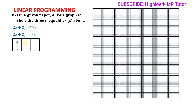If x is 0, substituting into the equation gives y = 25. Similarly, if x is 30, y becomes 5. We are going to plot these two points on a Cartesian plane.